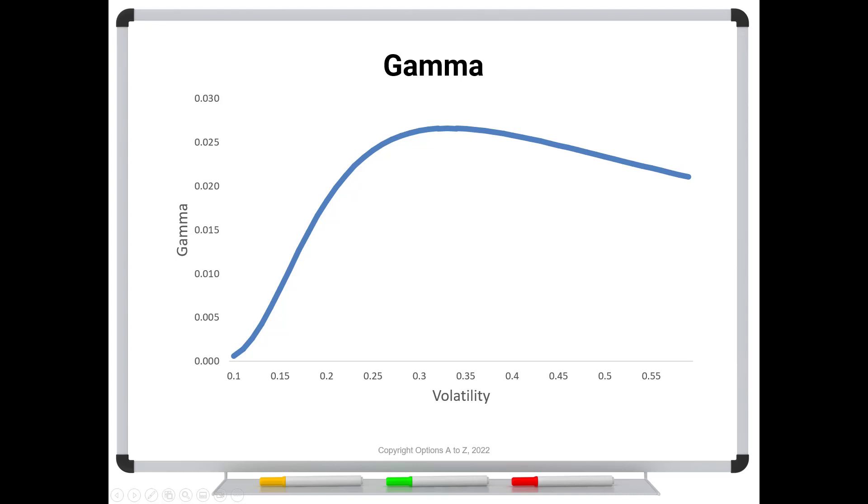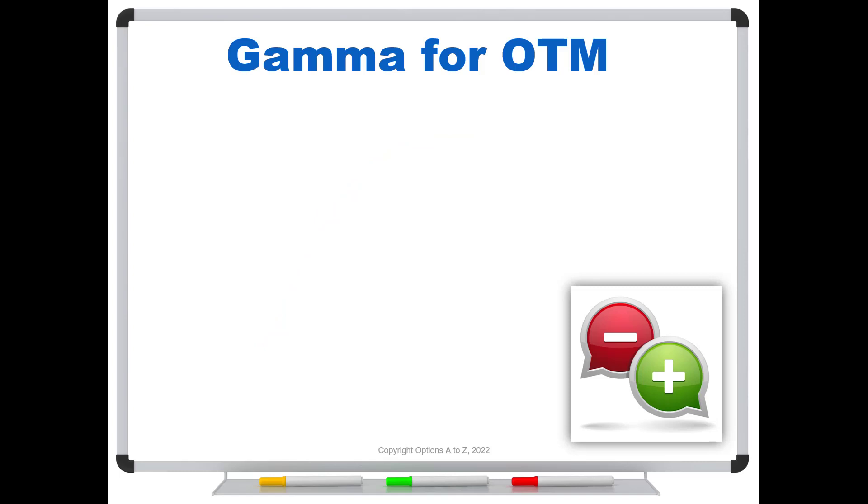And so that is a really critical concept for strategies where you are focusing on gamma. You need to know where these acceleration points might be. So always remember your gamma for out of the money options. As volatility rises, gamma rises for a while, but eventually it begins to fall.